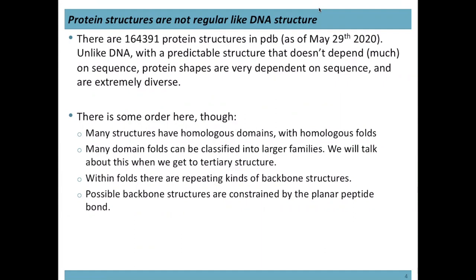As of May 29th, there are 164,391 protein structures in the PDB — the Protein Databank. DNA has a very predictable structure, a double-stranded helix, that doesn't depend much on the sequence. Protein shapes are very dependent on the sequence and are extremely diverse. Many structures have homologous domains with homologous folds. We can classify these folds into larger families. We have 20 amino acids, so the variability compared to DNA is quite large.